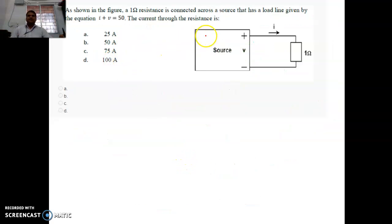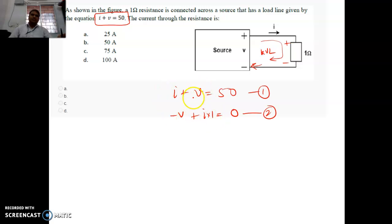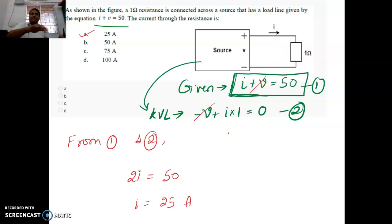Another question. Here the source is given and the resistor is given 1 ohm. There is one equation already given to you: I plus V equals 50. Another equation you can form, the current direction is this direction. So there will be a plus and minus and you can put a KVL in this closed loop. First, you will get minus V because it is encountering minus first. Then you get plus 1 into I. From the KVL, you get this second equation. If you solve these two equations, if you just add up these two equations, you will get 2I equals 50 and I equals 25. The answer is A.